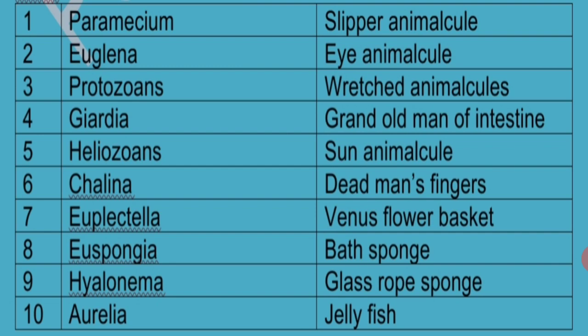Giardia is an intestinal protozoan parasite and is called Grand Old Man of Intestine. Heliozoans are provided with Axopodia which look like the rays of the sun, hence heliozoans are called Sun Animalcules.